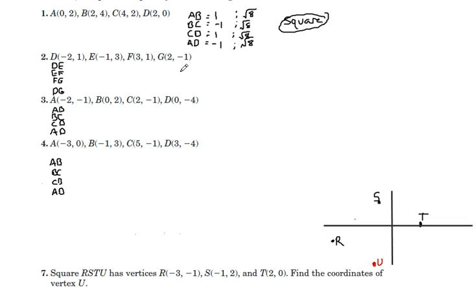Okay, number 2. Let's first do the distance formula this time. For DE, the distance is square root of 5. For EF, the distance is square root of 20. For FG, the distance is square root of 5. And for DG, the distance is square root of 20. So far, we have opposite sides are congruent.